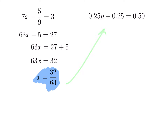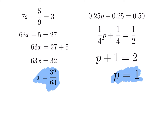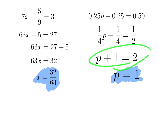The next problem has decimal values: 0.25 is a quarter and 0.5 is a half, so we rewrite them as fractions. We can multiply across by 4 — the smallest number that cancels the denominators of 4 and 2 — giving us p plus 1 equals 2. Subtracting 1 on both sides gives p equals 1. You could also subtract 0.25 and divide, but it is a good strategy to always eliminate fractions when possible.